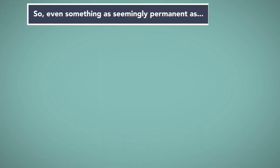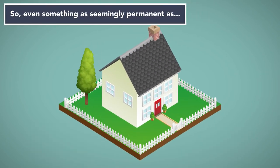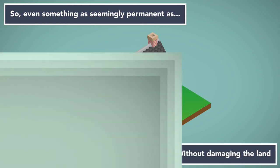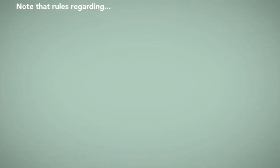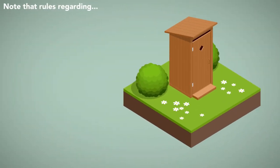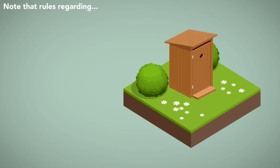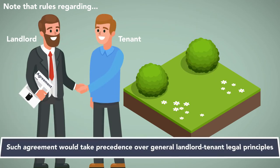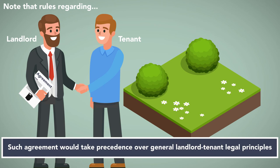So even something as seemingly permanent as a fence may not be considered a fixture if it can be removed without damaging the land. Note that rules regarding fixtures and permissible removals may be agreed in advance between landlord and tenant, and such agreement would take precedence over general landlord-tenant legal principles.